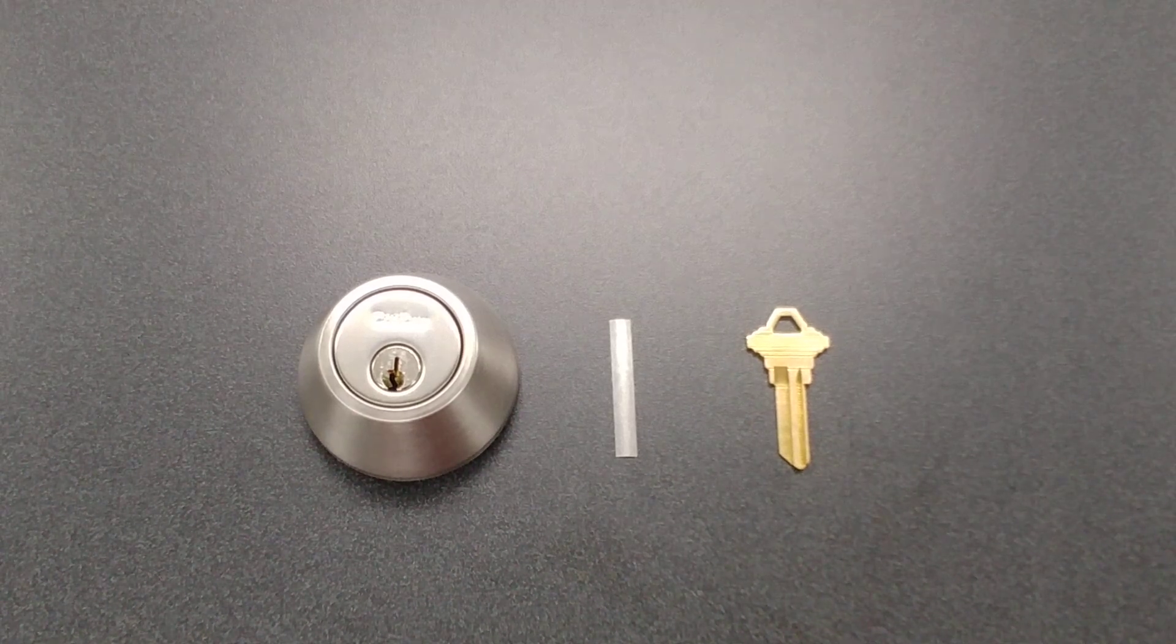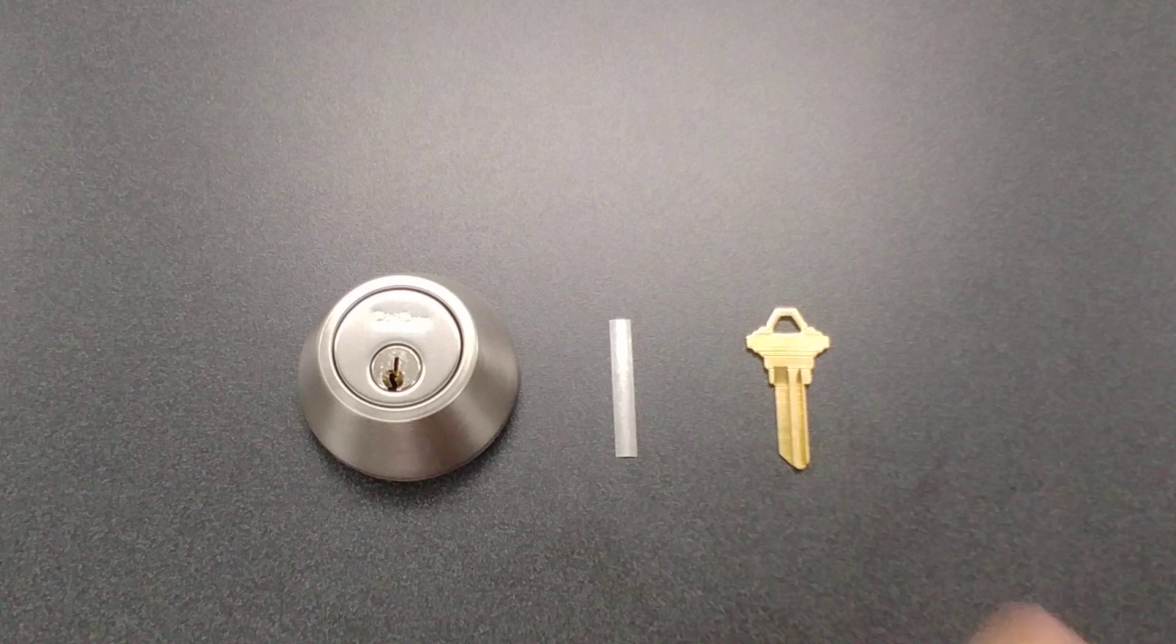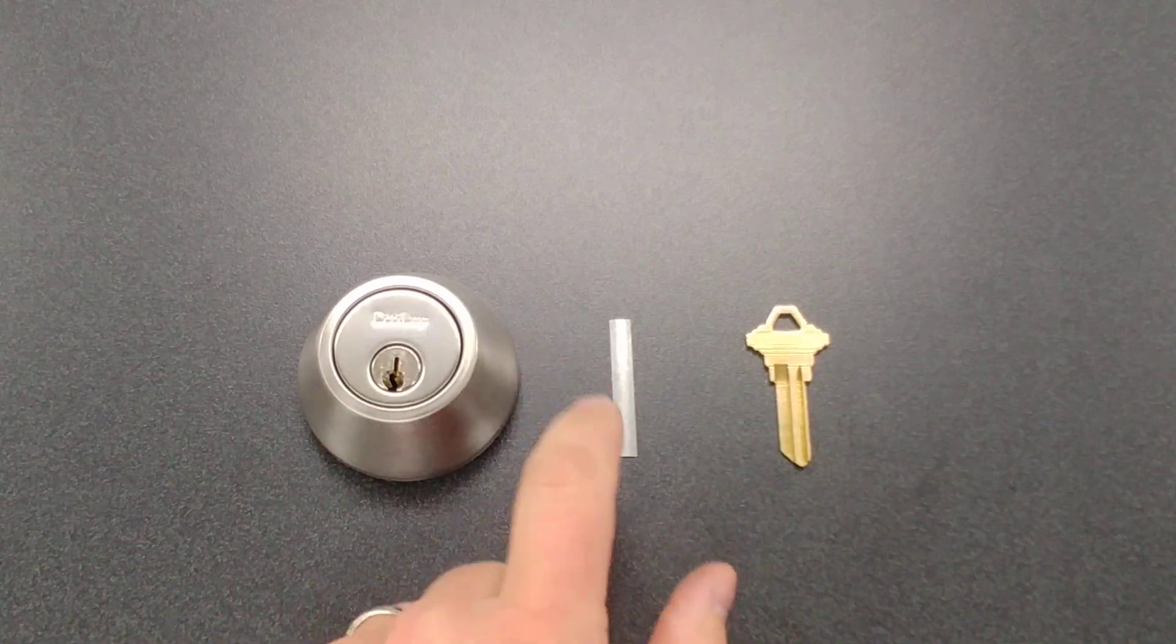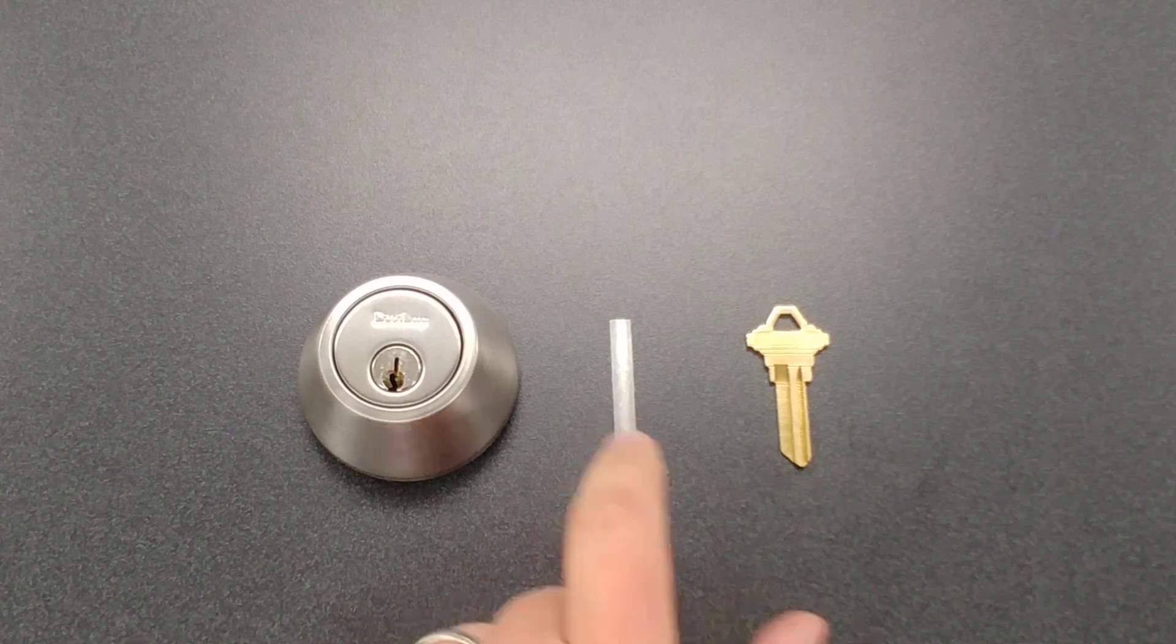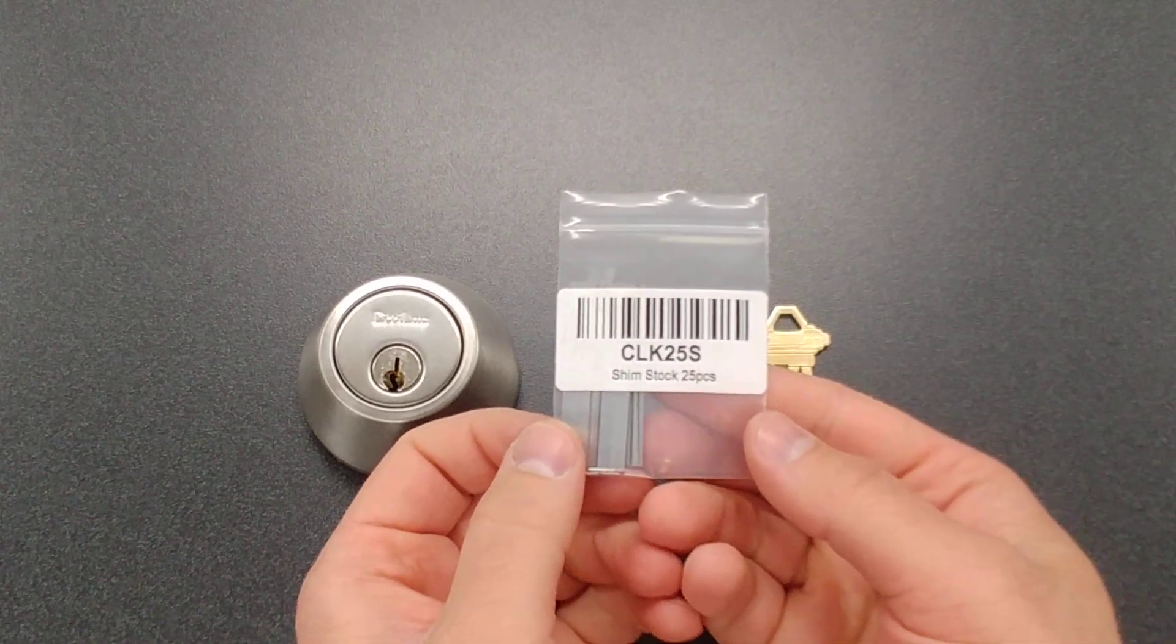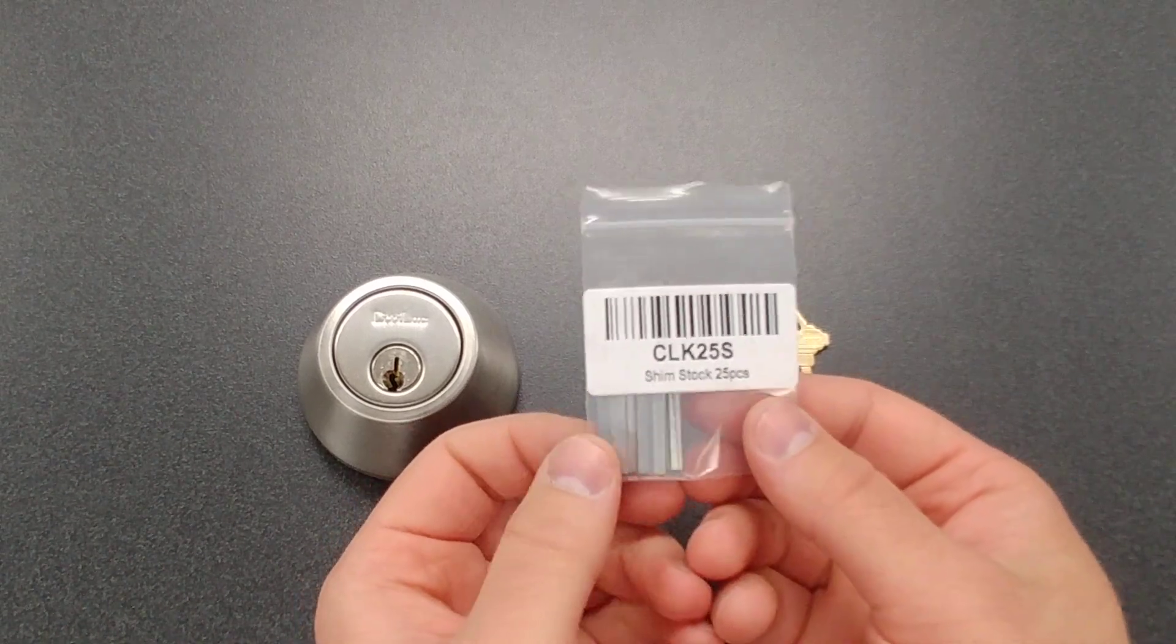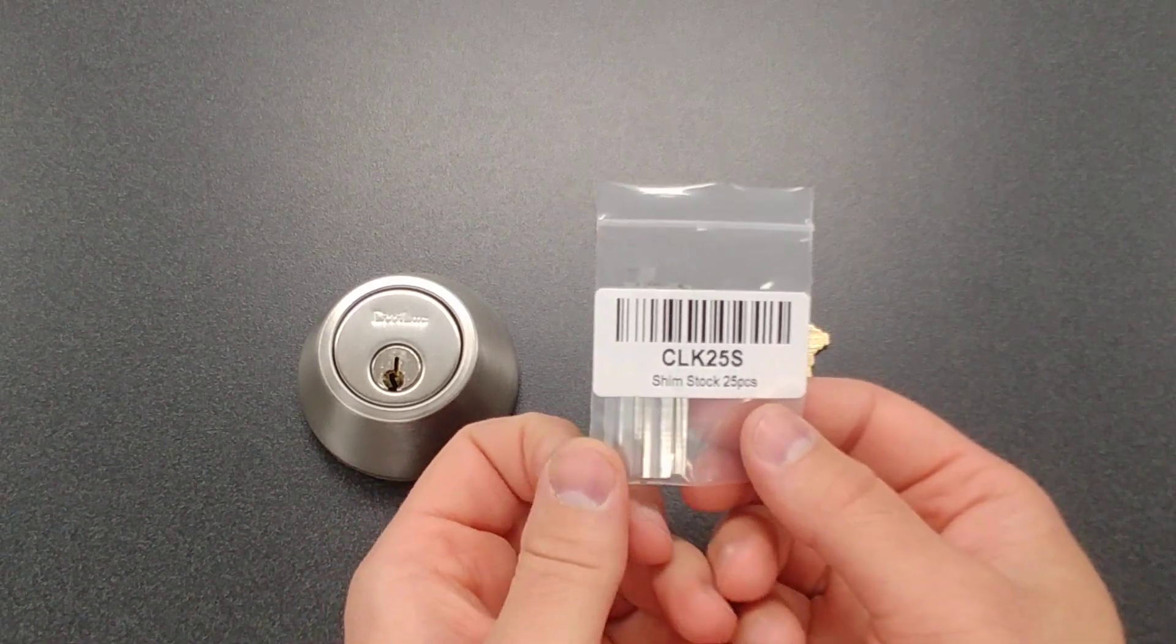There's only two items required to shim a lock. First is going to be a blank key that fits into the lock cylinder. And second is going to be the lock shim. Lock shims are sold in packs of 25. Our part number is CLK25S. And a pack like this is going to cost you between three and four dollars.